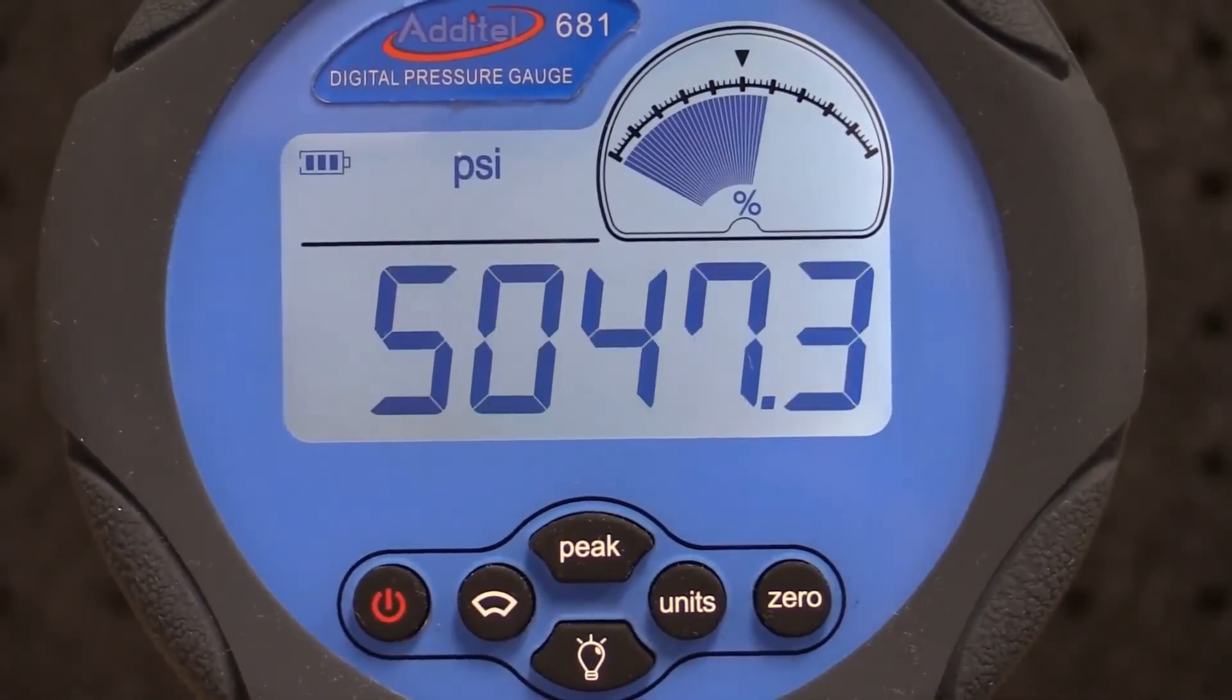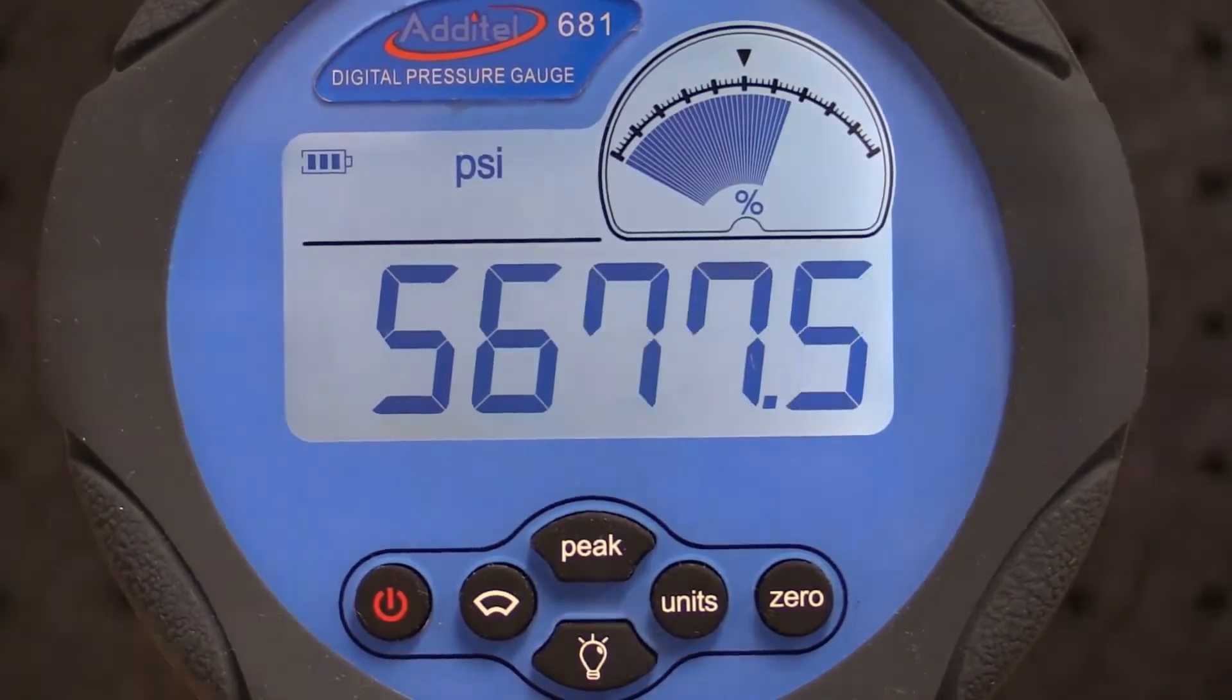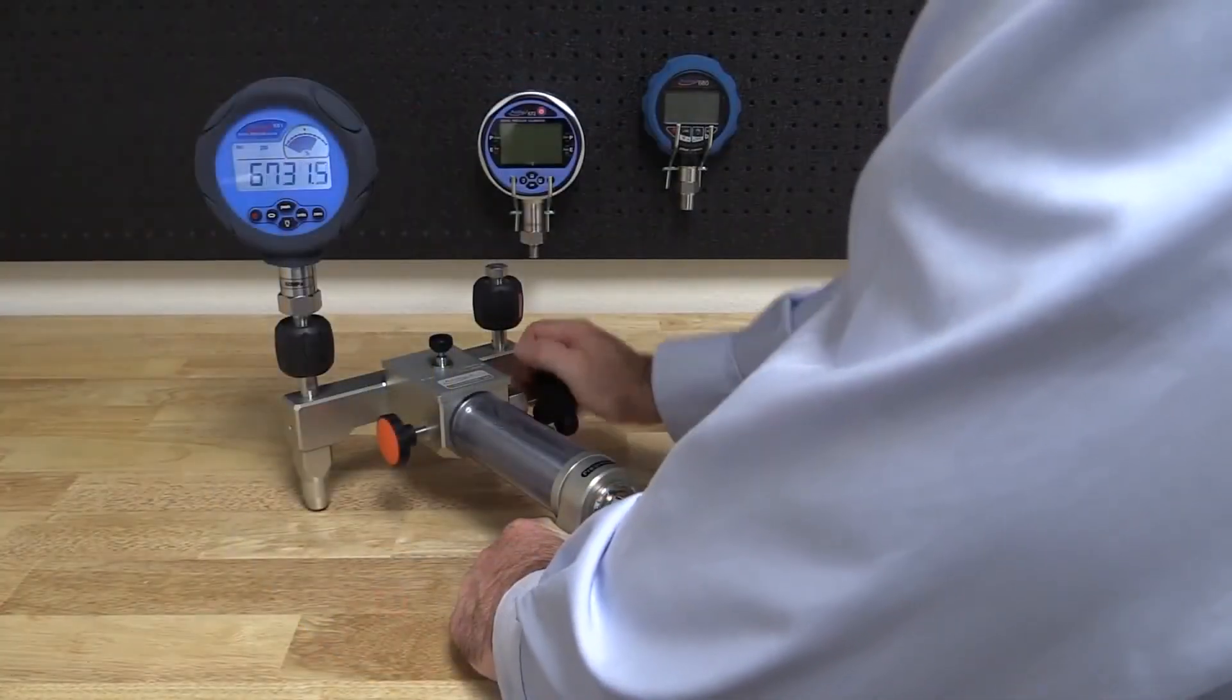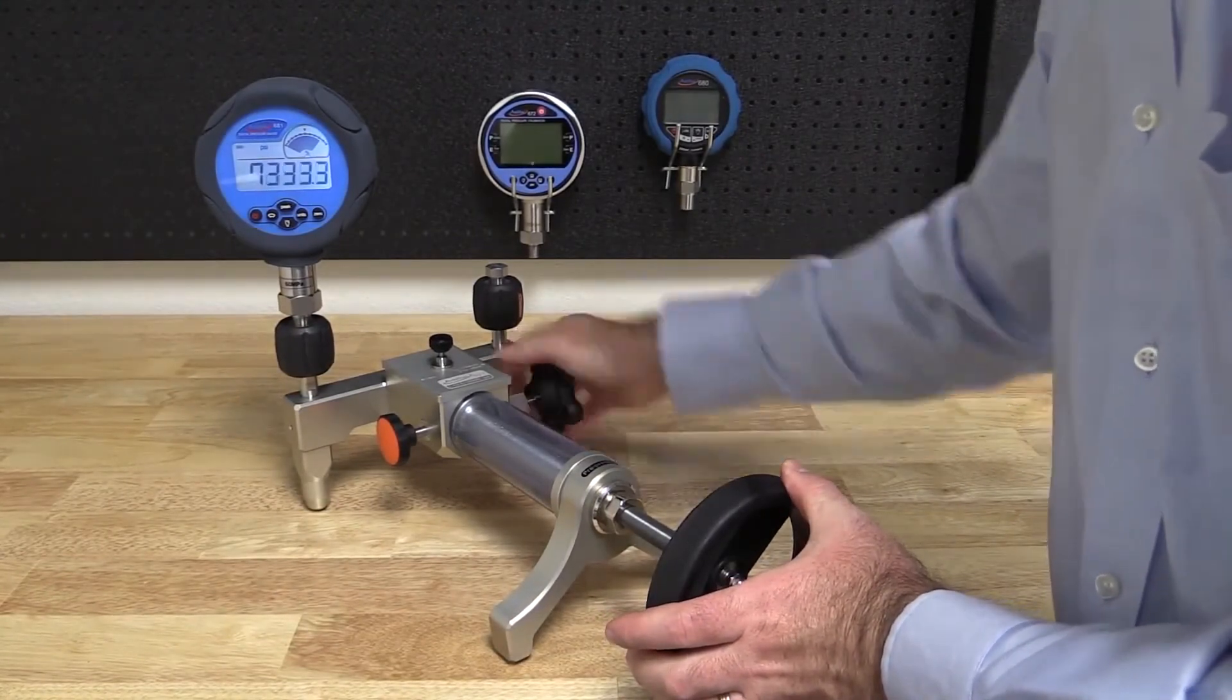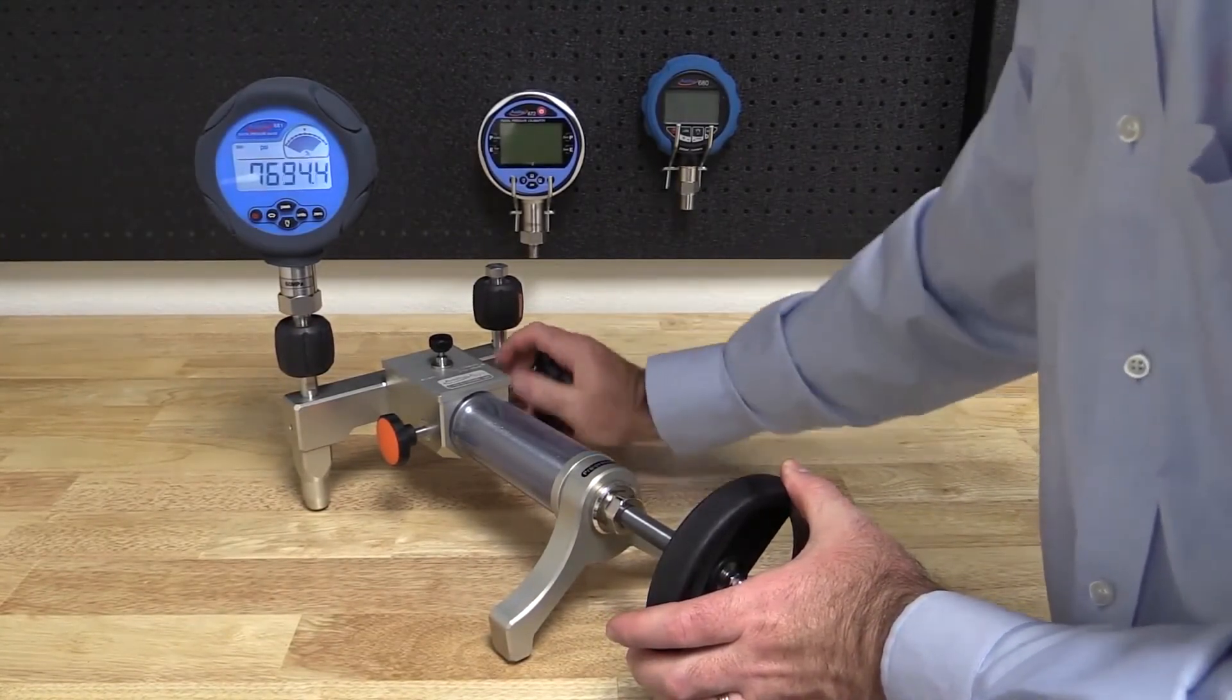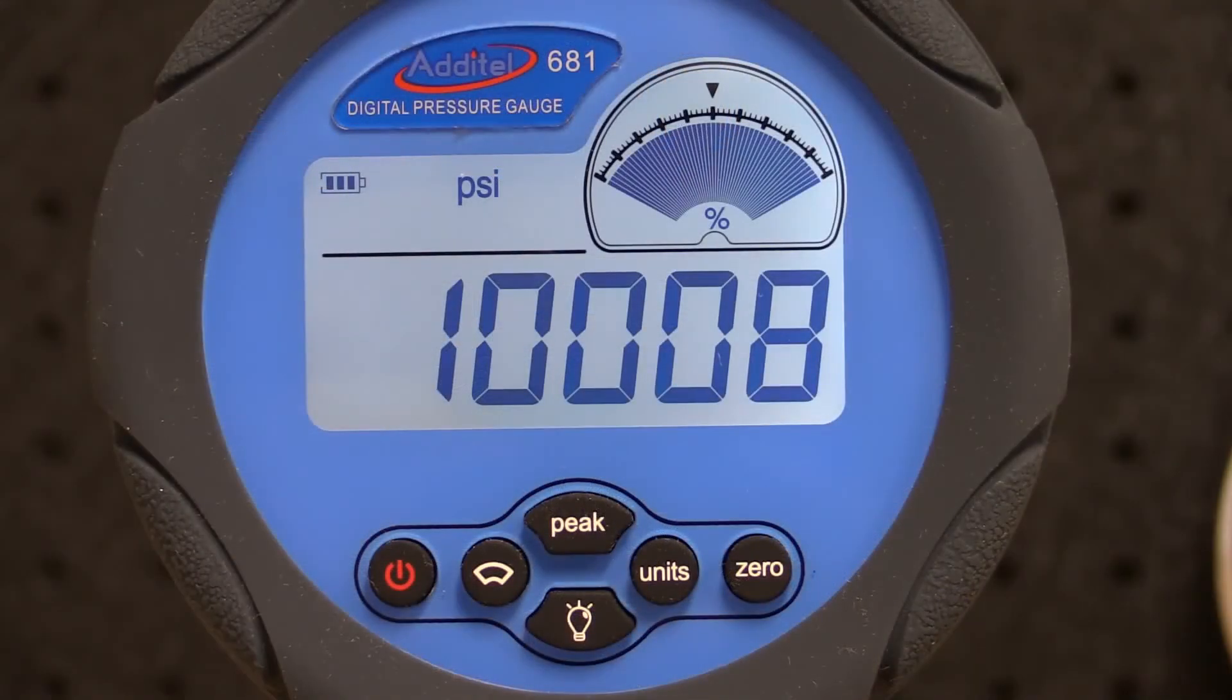For higher pressures, we need to use the high pressure or fine adjustment knob to generate the remaining pressures and dial into a cardinal point. At the high pressures, it may take a few minutes for the measurement to stabilize. Small adjustments using the fine adjustment knob may be needed to ensure that you achieve the cardinal point.